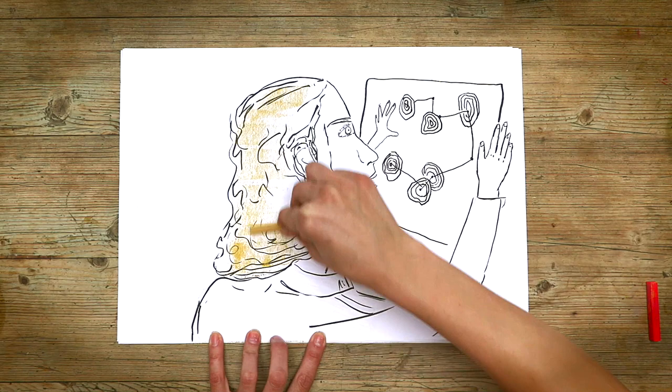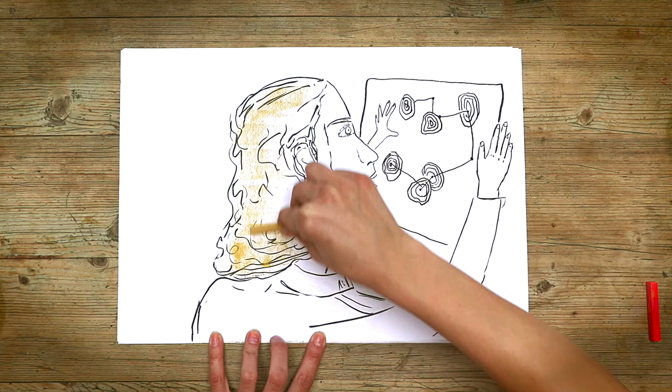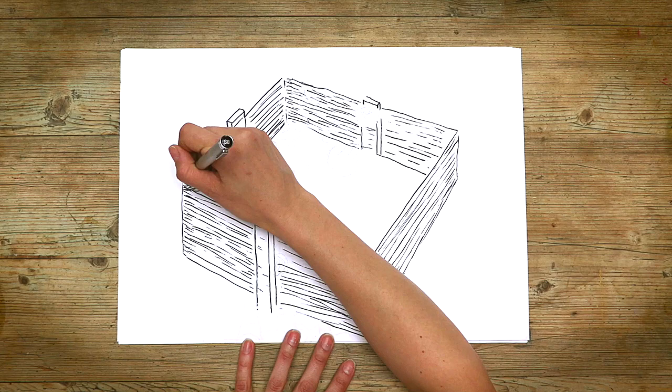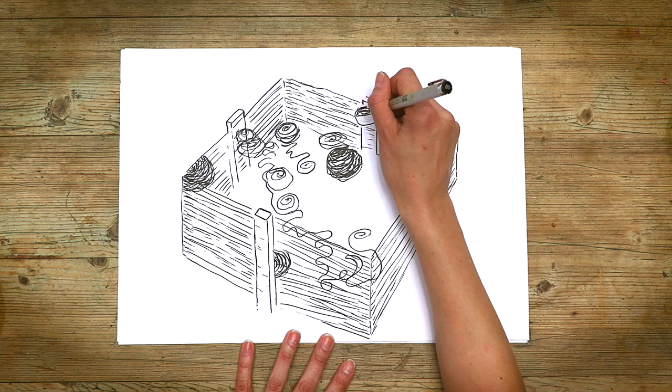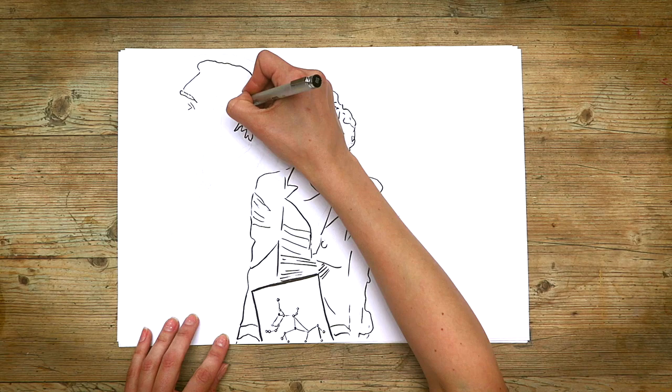Her name was Dorothy Crowfoot Hodgkin and she was a pioneer of protein crystallography, a revolutionary technique. It was a way of seeing individual atoms and molecules, meaning scientists could picture things thousands of times smaller than could be seen with a microscope.